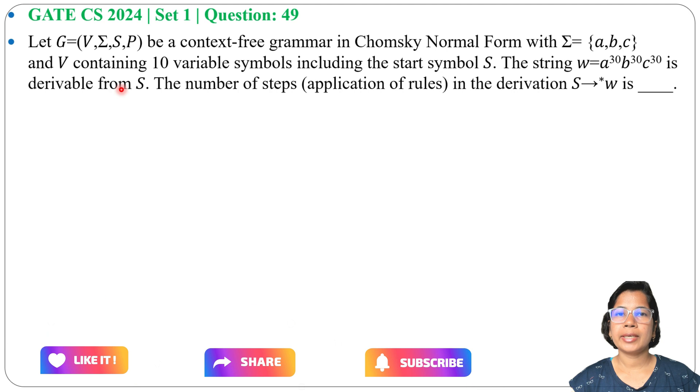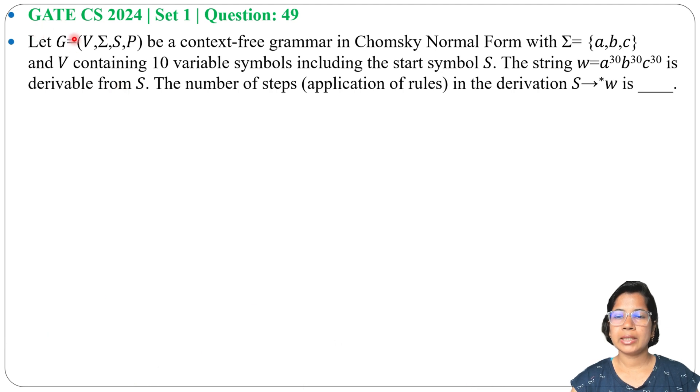Let's solve one previous question on context-free grammar. This question was asked in GATE CS 2024 Set 1, Question 49. Let G = (V, Σ, S, P), where V is the variable set, Σ contains the alphabet, S is the start symbol, and P stands for production.